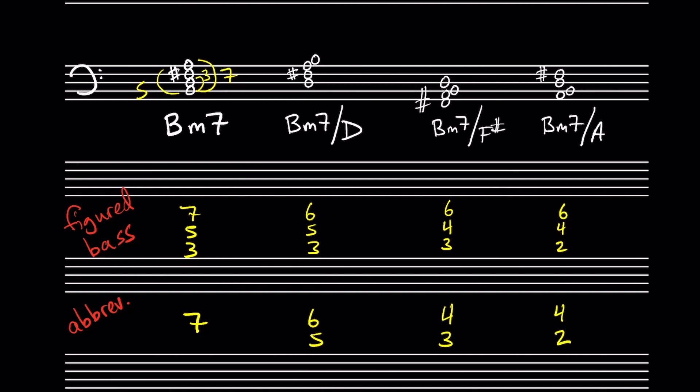Now, you're just going to have to remember these abbreviated figured bass symbols. It doesn't take that long to memorize them. Here's a handy way of memorizing them. You're just counting down from 7 with an extra 4 thrown in there.